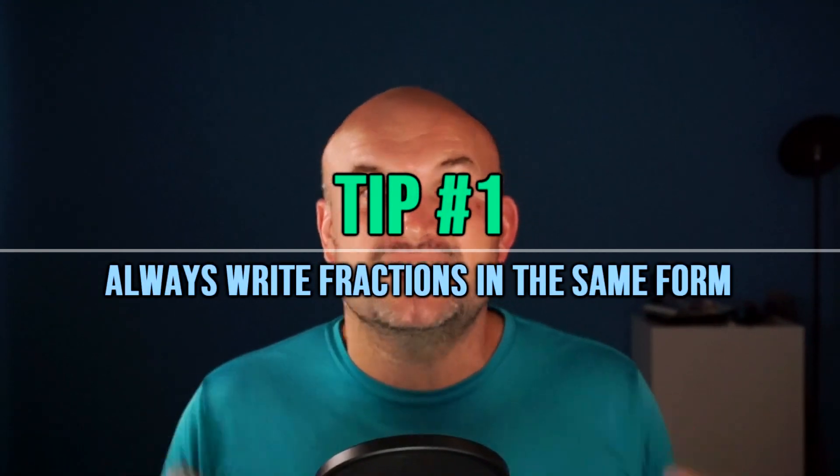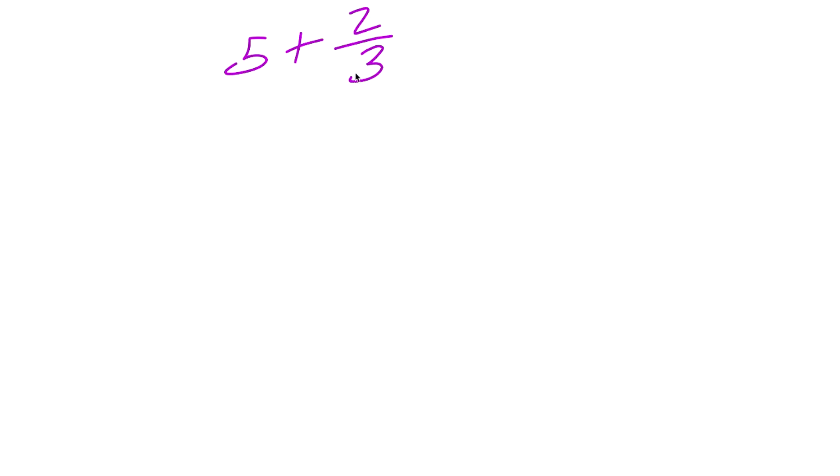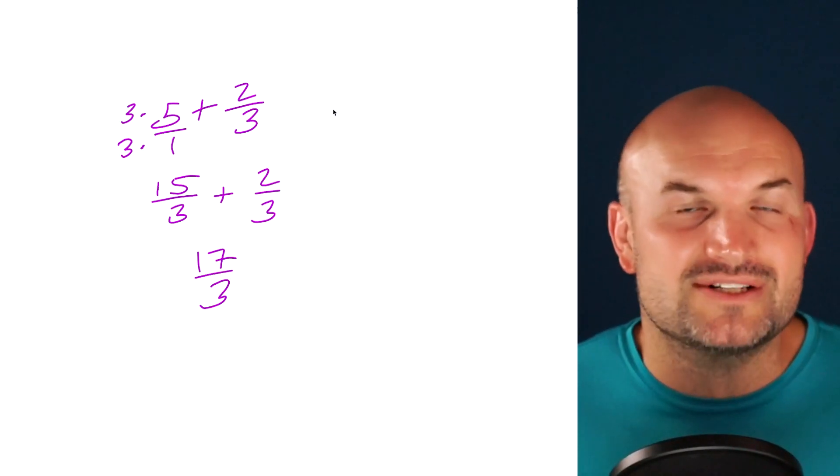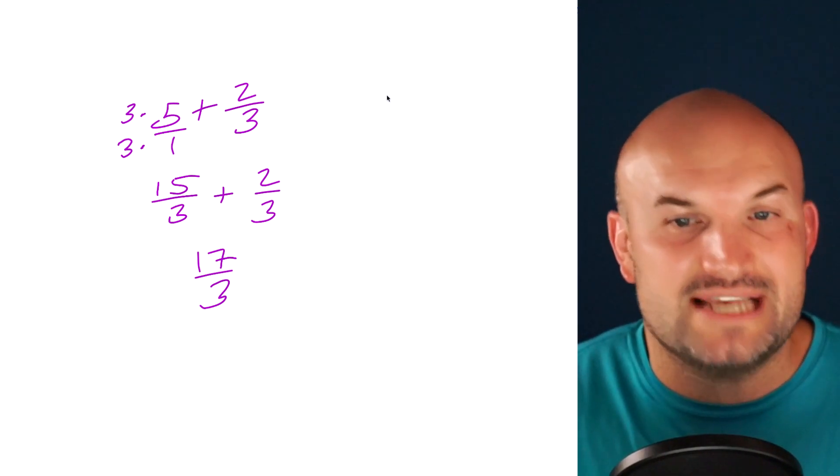Tip number one is always write the fractions in the same form. So in this first example, you can see I have 5 plus 2/3. Now 5 is a whole number and 2/3 is a fraction. So if I wanted to combine these, I got to get common denominators. I'll multiply 3/3 on the left-hand side to produce a fraction that's 15/3. Now I have a fraction plus a fraction, and I can add the numerators and keep the common denominator the same.